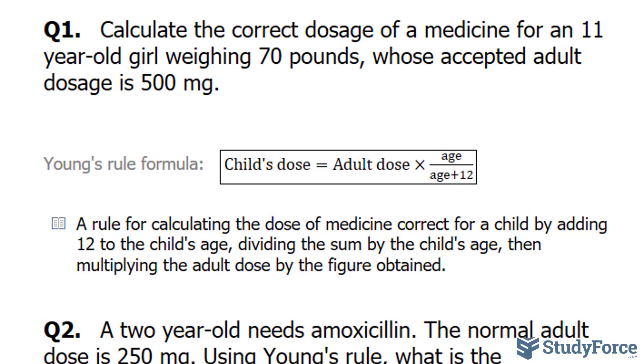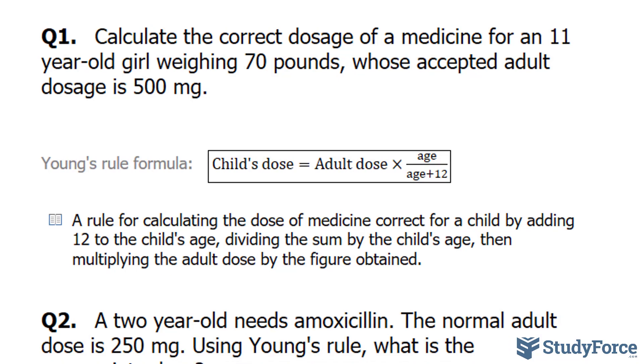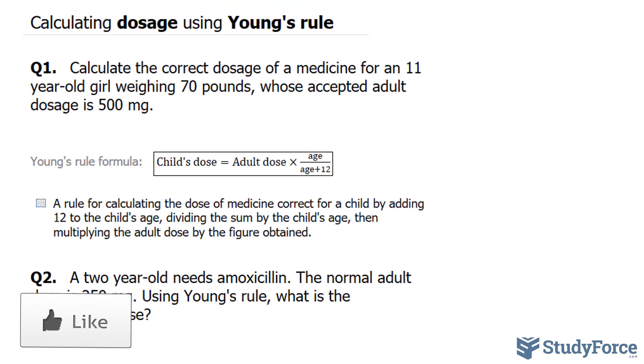So if you're given an age that's, let's say, 18 months, which is a year and 6 months, you have to convert that into a decimal number. And I'll show you an example of that at the very end. So with that being said, let me show you how to apply this formula.